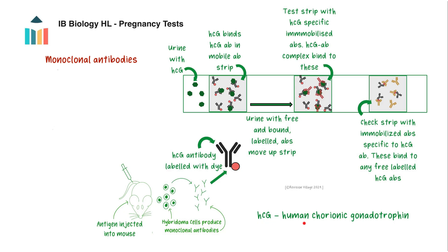HCG is human chorionic gonadotrophin, and it's the pregnancy hormone. In a pregnancy test, monoclonal antibodies that have been specifically designed to recognise and bind to HCG are used. These antibodies are produced in the laboratory from mice plasma B cells, which are fused with tumour cells to make hybridoma cells. It is these hybridoma cells that produce the monoclonal antibodies.